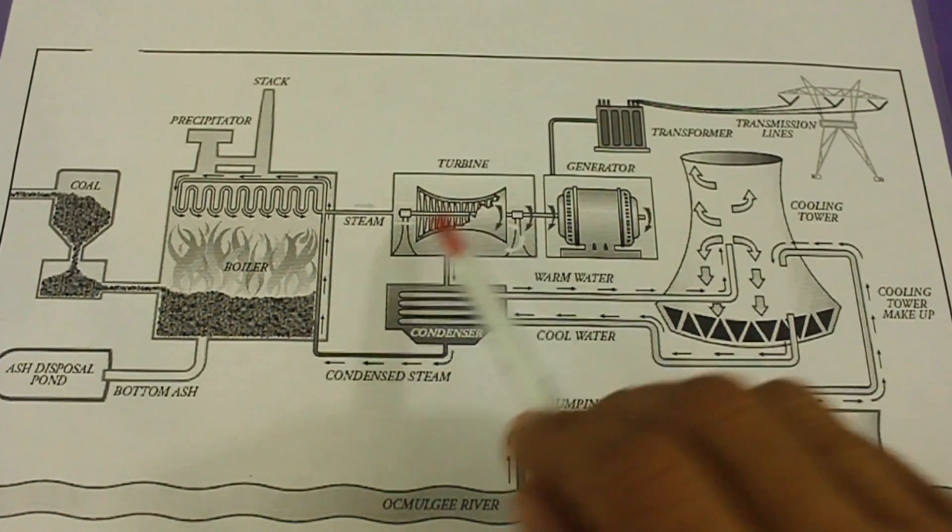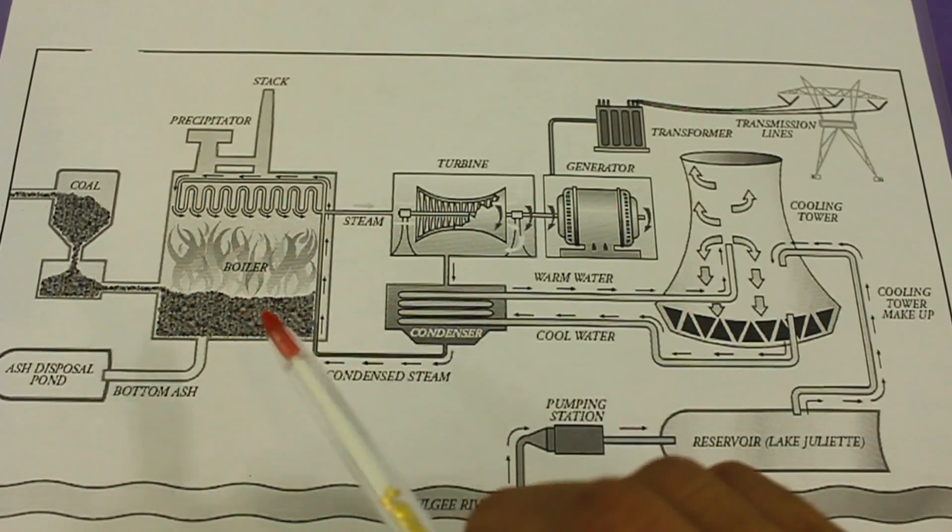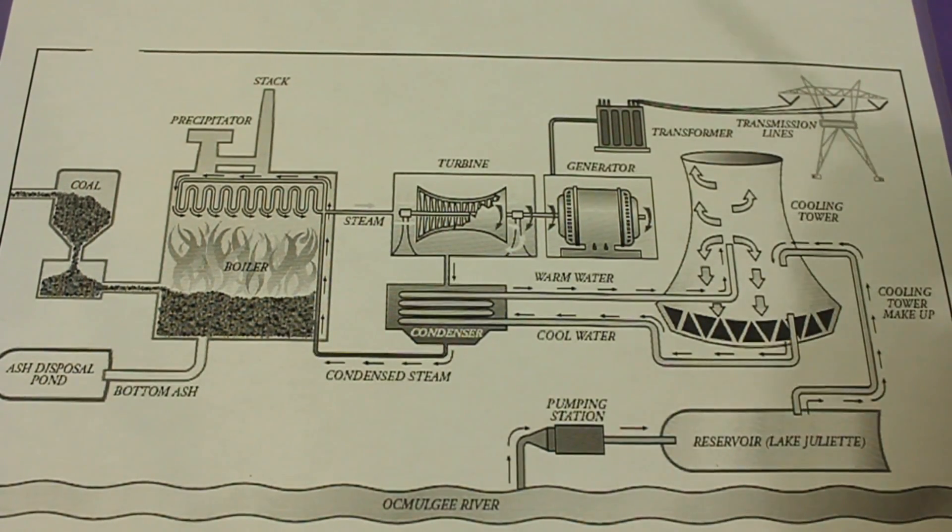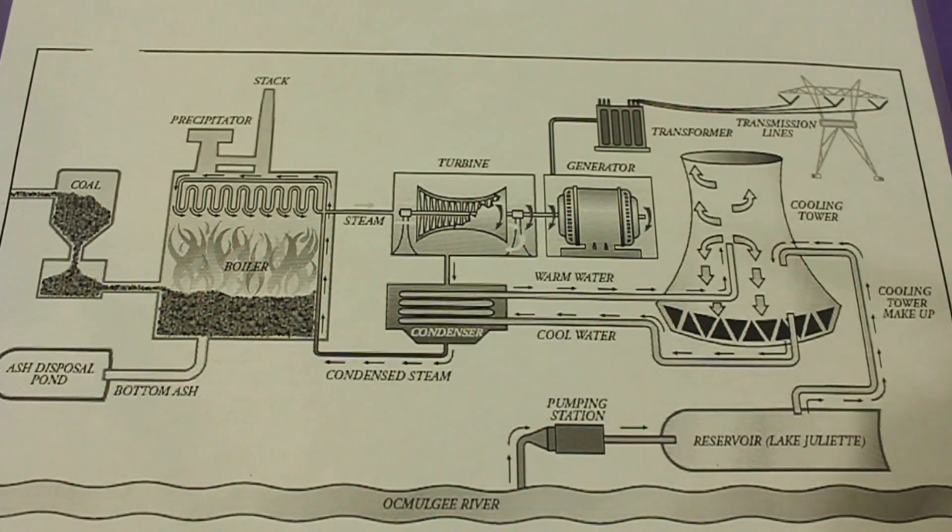In this case the turbine works with steam that we get by boiling water using coal. But you can also use energy from, for example, nuclear energy or hydraulic energy.